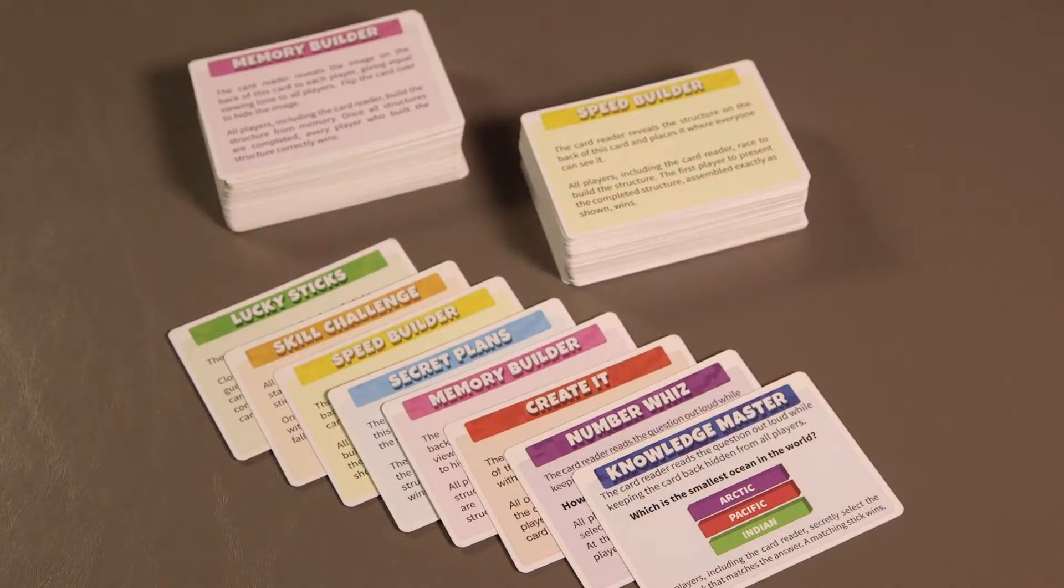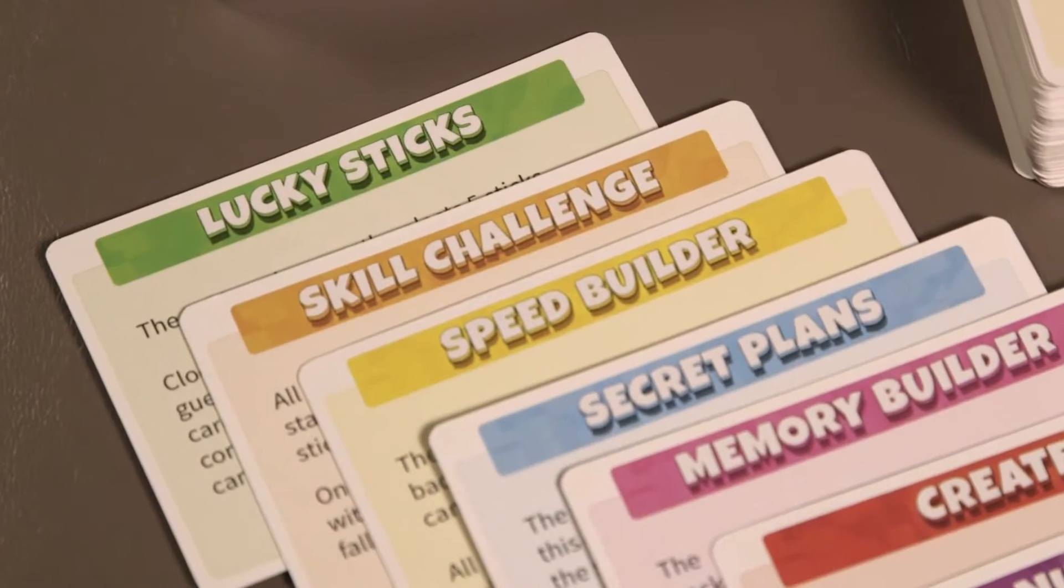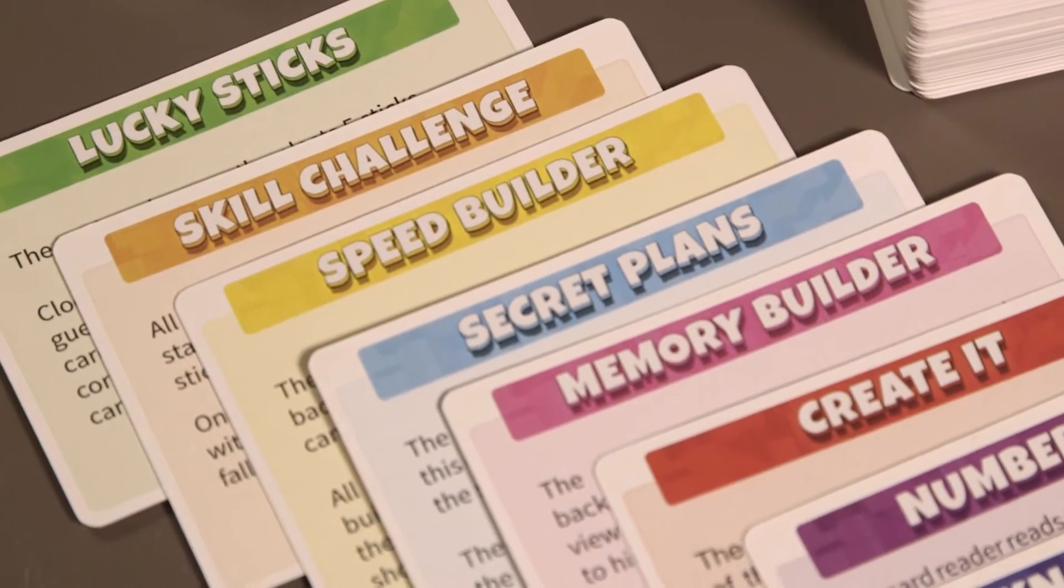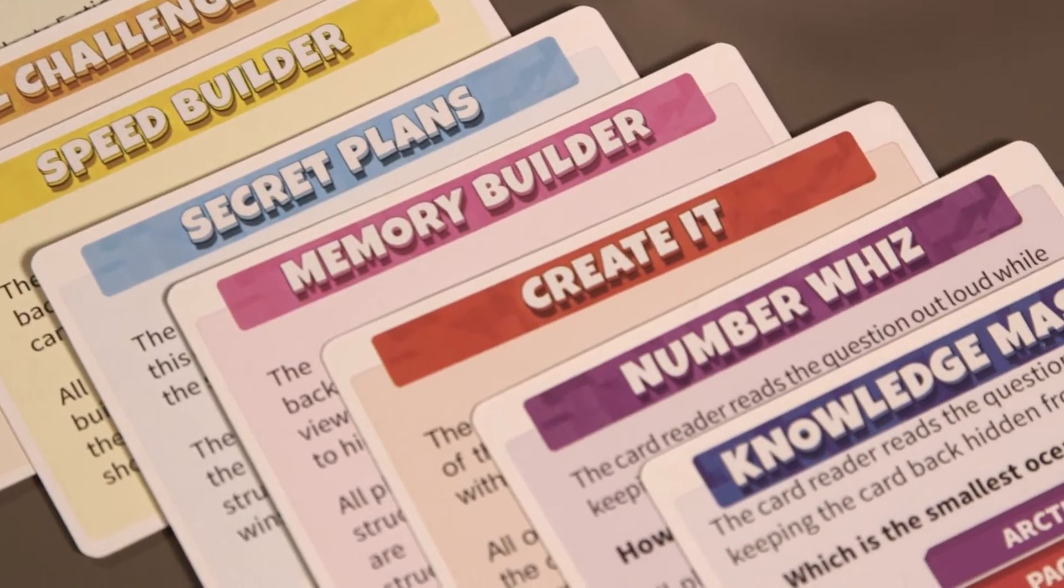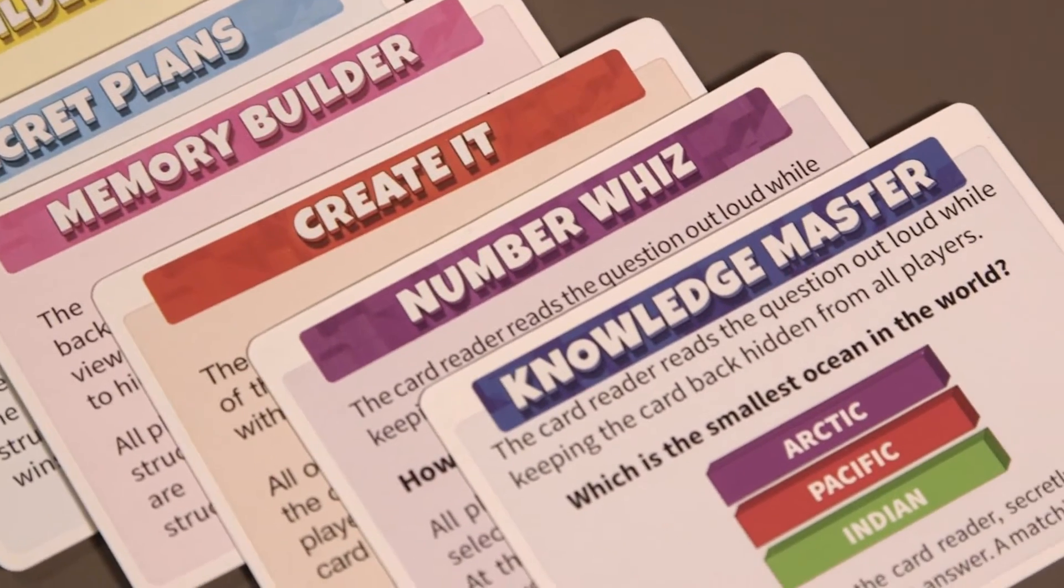You'll also find 158 activity cards in 8 categories including Lucky Sticks, Skill Challenge, Speed Builder, Secret Plans, Memory Builder, Create It, Number Wiz, and Knowledge Master.